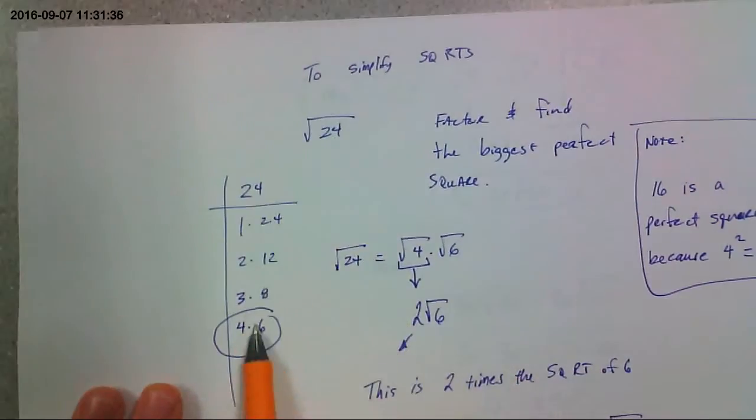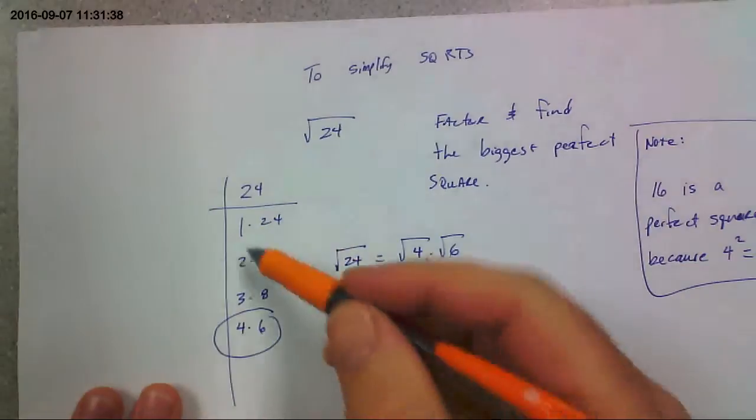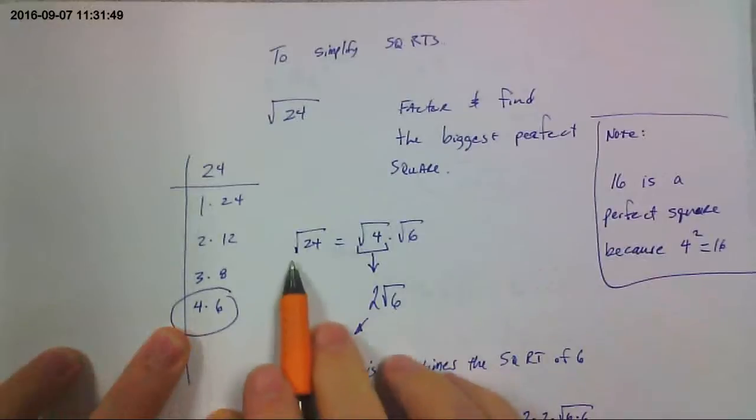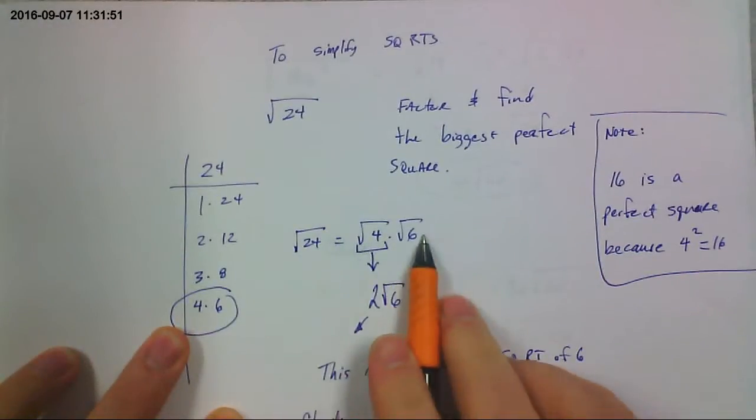So you factor the radicand. Here are the factors of 24. Do them in order. Don't skip around because you'll miss one. And you look for the biggest perfect square. You could do this in your head. 4 is the biggest perfect square that's a factor of 24.